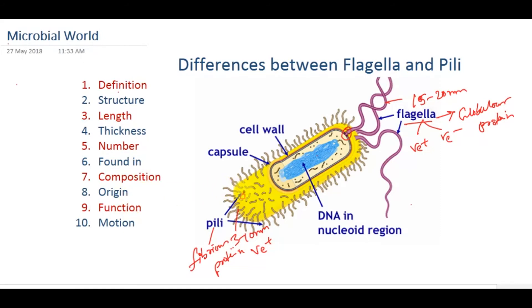In which part of the bacteria do these structures come from? For pili, it comes from the cell surface of the bacteria — that is, from the cell wall. On the other hand, for flagella, it comes through the cell membrane of the bacteria.